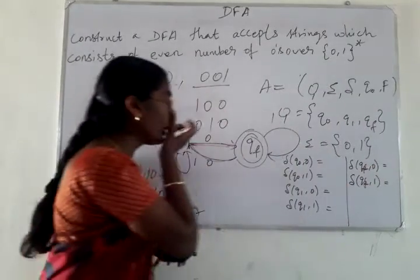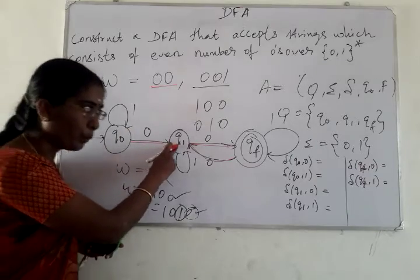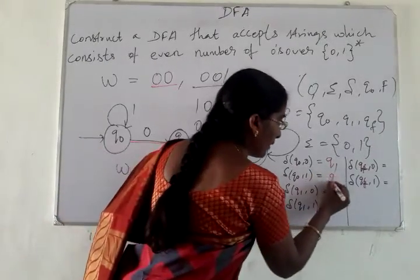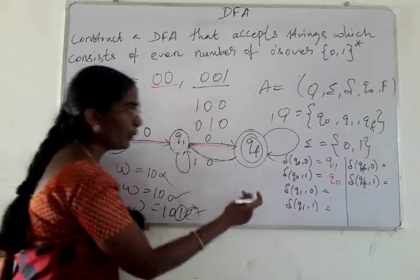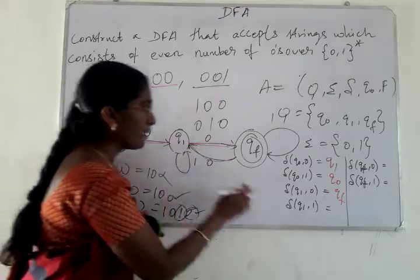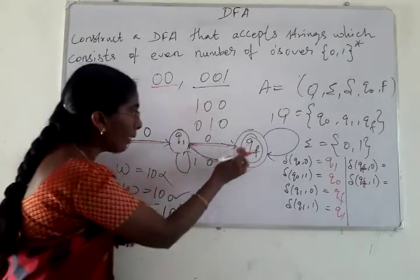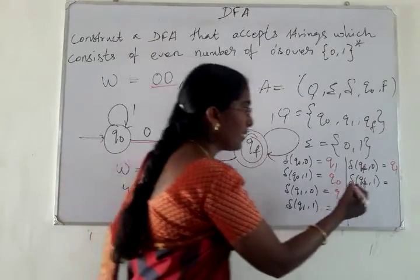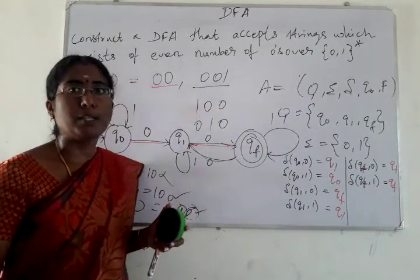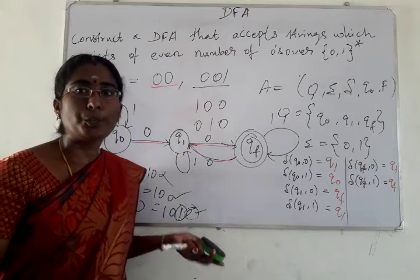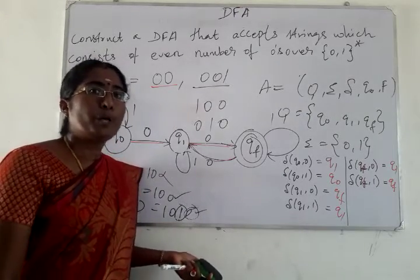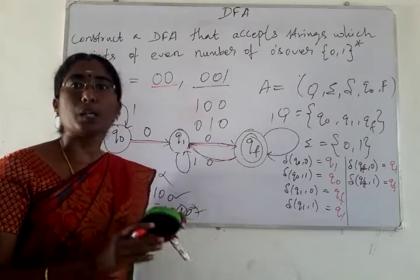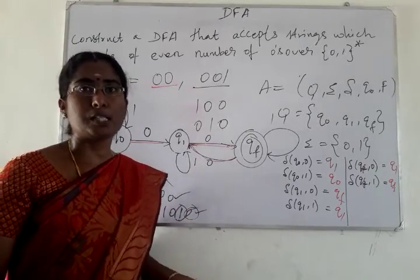The transitions are: δ(Q0, 0) = Q1; δ(Q0, 1) = Q0 (self-transition); δ(Q1, 0) = QF; δ(Q1, 1) = Q1 (self-transition); δ(QF, 0) = Q1 (back transition); δ(QF, 1) = QF (self-transition). The start state is Q0 and the final state is QF. This is the complete DFA for the condition that strings consist of an even number of zeros with no restriction on the number of ones. Thank you.